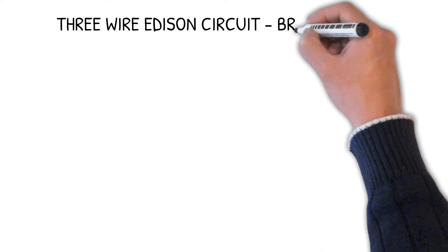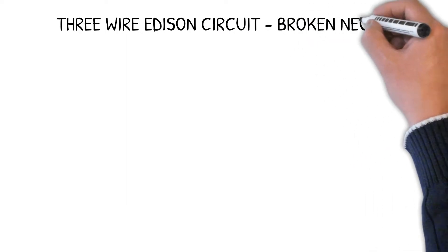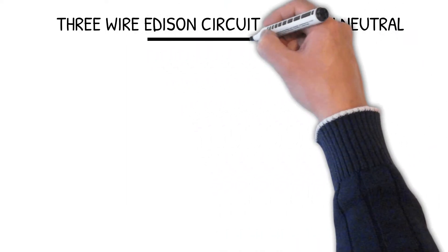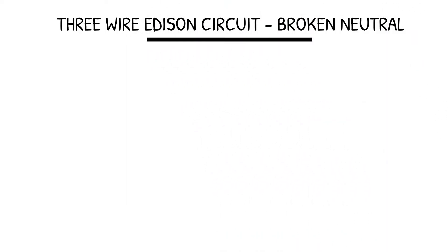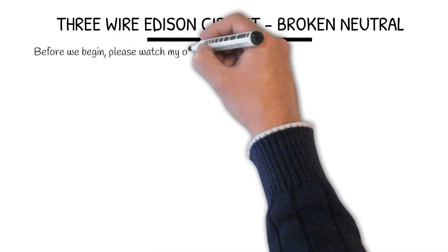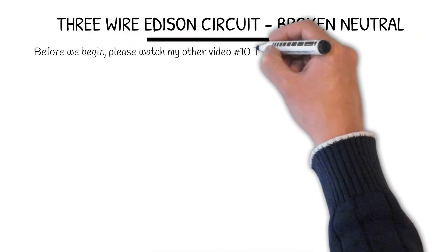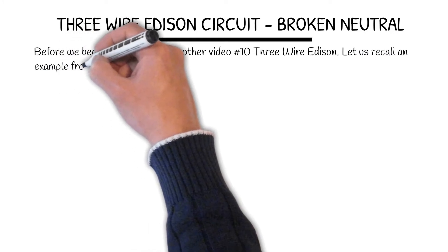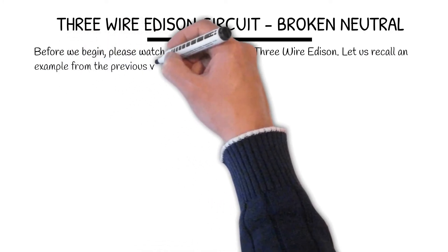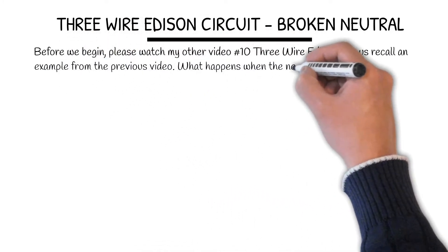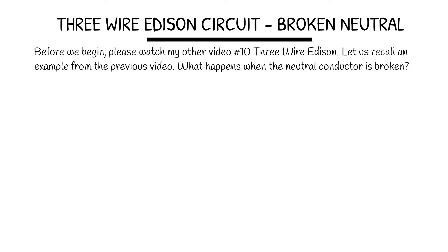3 Wire Edison Circuit Broken Neutral. Before we begin, please watch my other video number 10, 3 Wire Edison. Let us recall an example from the previous video. What happens when the neutral conductor is broken?